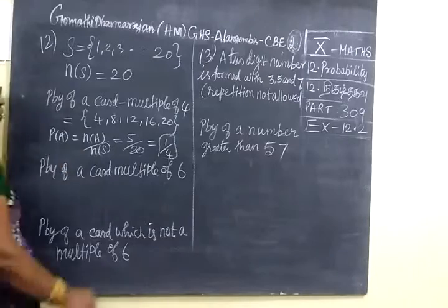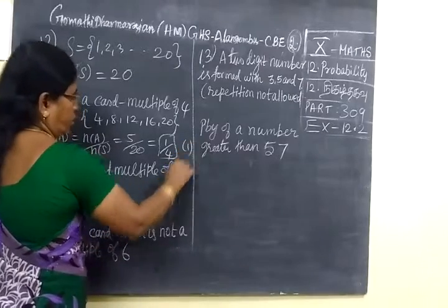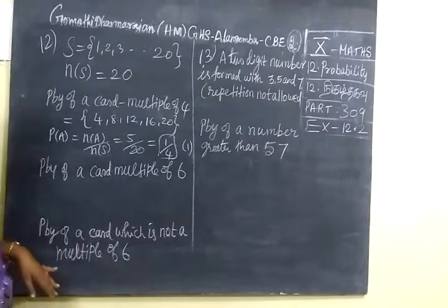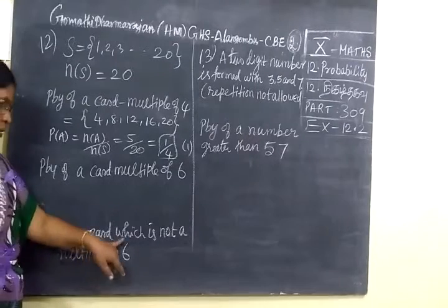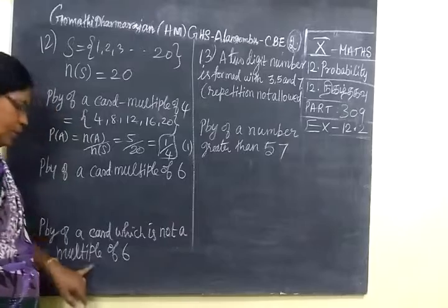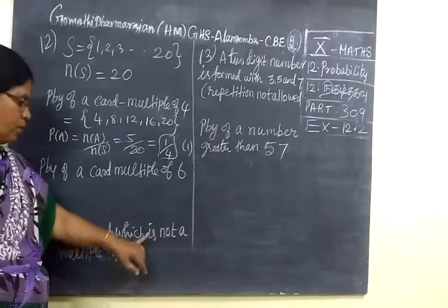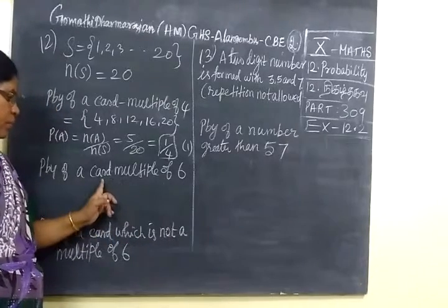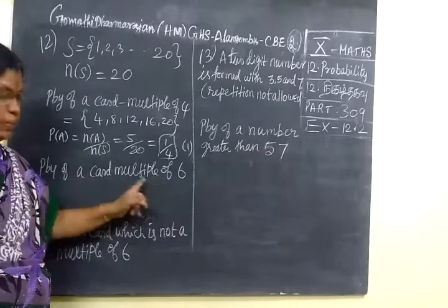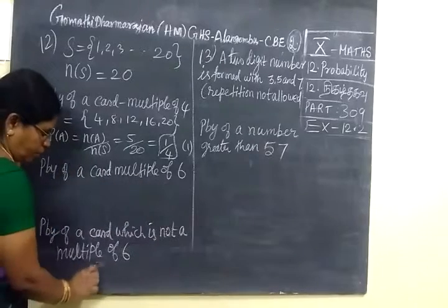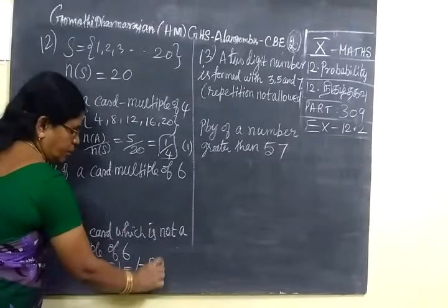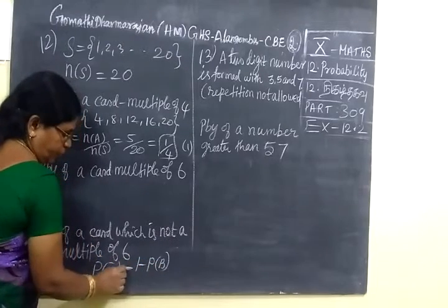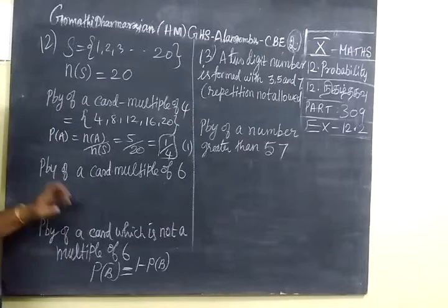Very simple sum only. This will come under two marks. Then for the next step another one mark. We want to find probability of a card which is not a multiple of 6. First we want to find multiple of 6, then use complement. We know P(A bar) equals 1 minus P(A). So using this formula we find.